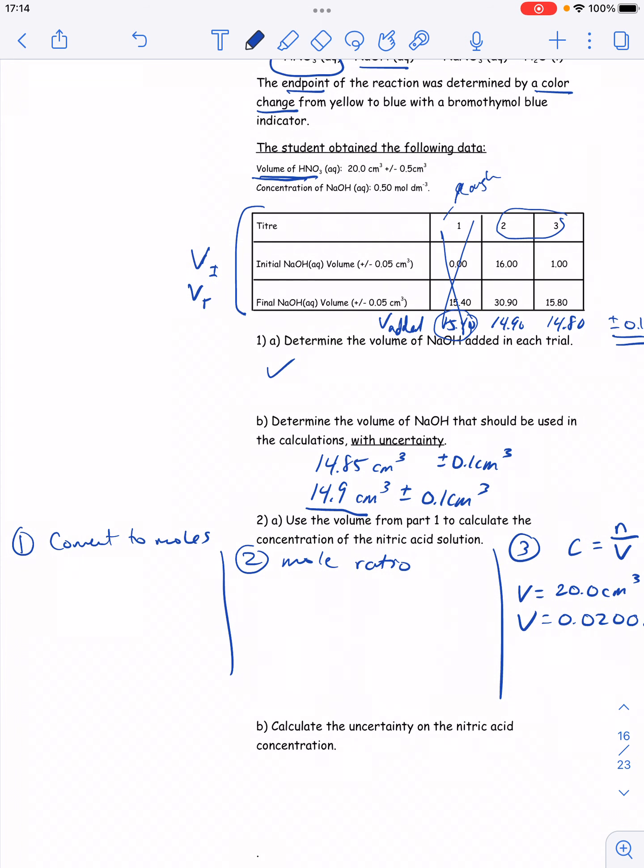Well, the only thing I know enough about to get moles is this NaOH that I've been adding. In titration, we're usually using n equals CV. The concentration is 0.5 moles per dm cubed—that was given. And the volume is from our data, is 14.9 cm cubed, which in dm cubed is 0.0149.